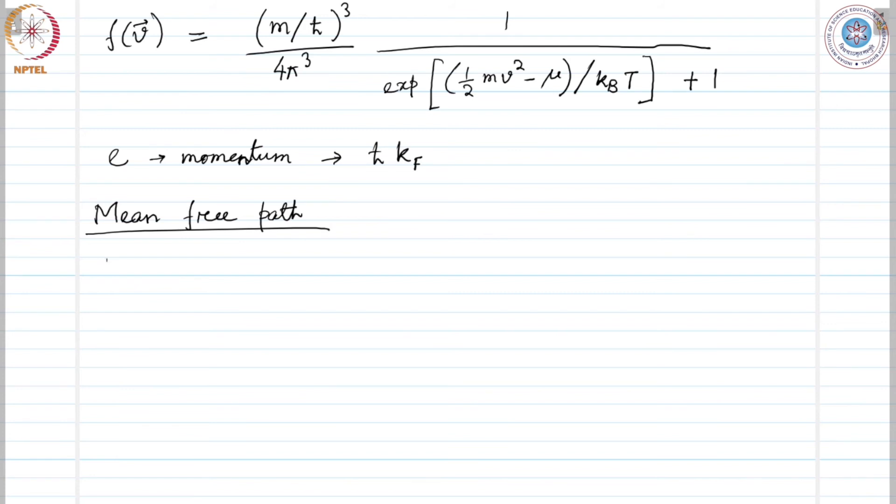If the Fermi velocity Vf is considered as a measure of the typical electronic speed, then the mean free path L can be calculated as Vf times the relaxation time tau.